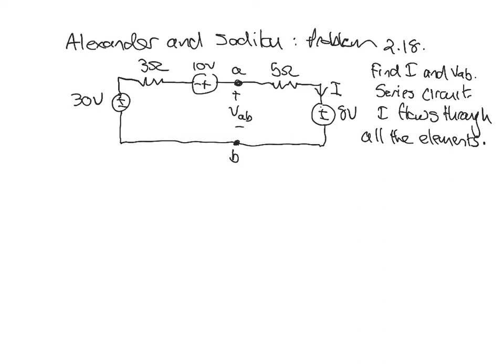We can write the voltage drop across the 3 ohm resistor as plus V3 ohm, and plus V5 ohm. From Ohm's law, V3 ohm equals 3 ohms times I.